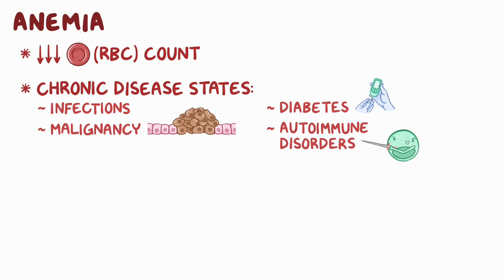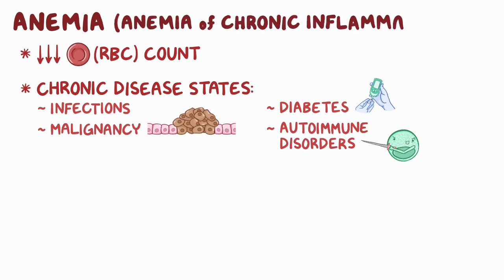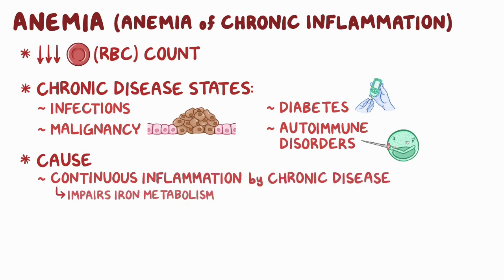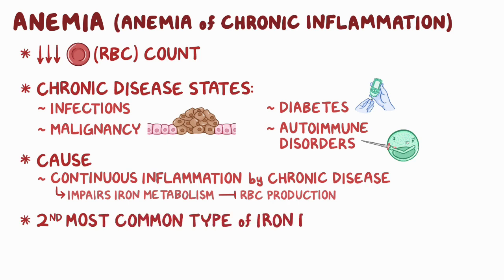The disease used to be called anemia of chronic inflammation because the underlying cause of anemia is the continuous inflammation generated by chronic disease, which impairs iron metabolism and, in turn, RBC production. The anemia itself is usually mild, and it's the second most common type of anemia after iron deficiency anemia.